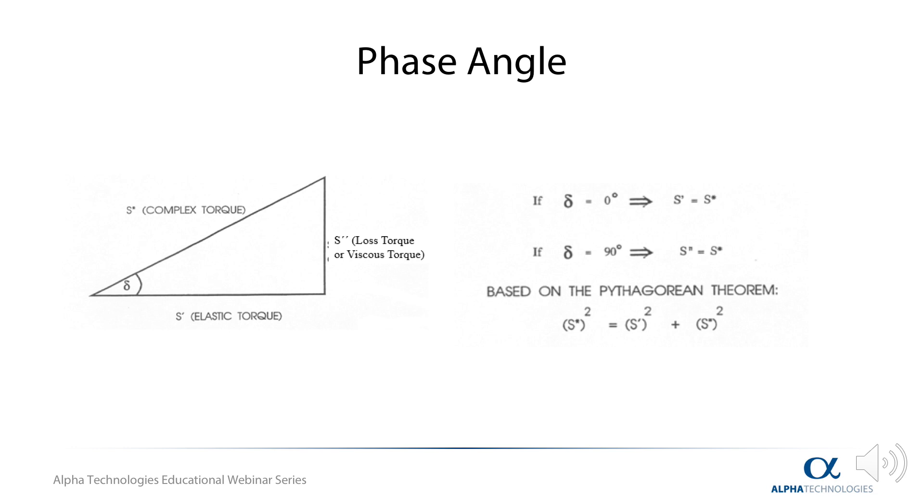S double prime, or G double prime, is the viscous or lost torque. It determines the amount of energy lost during a cycle. S star, or G star, is the complex torque, or complex modulus, which, as mentioned prior, is the measured torque at the transducer of the RPA, which is the total resistance of the sample to deformation.